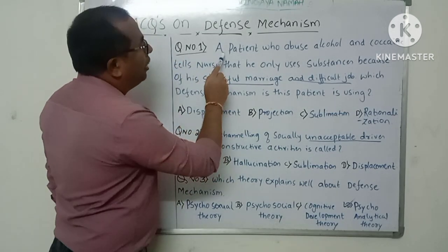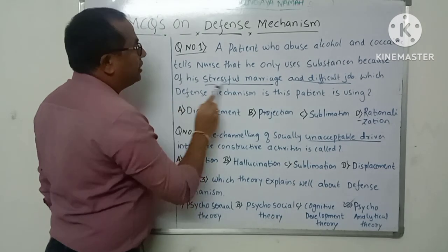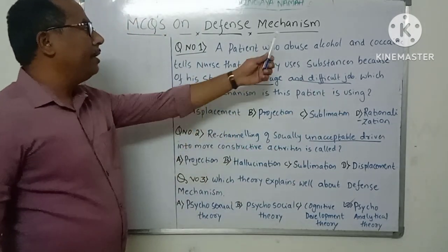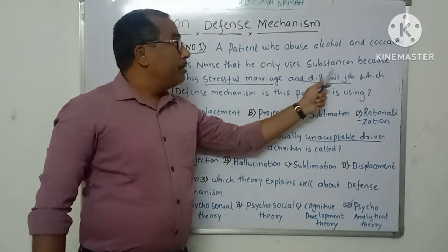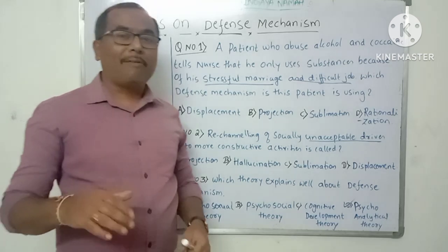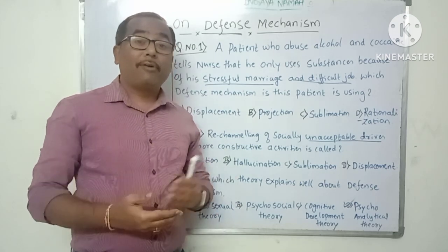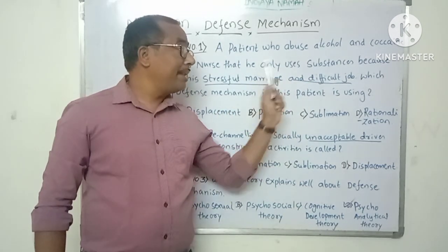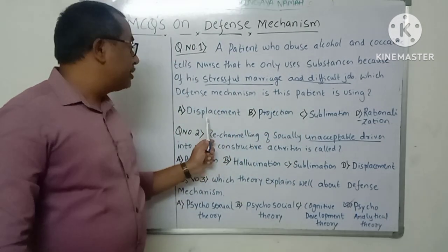Question number one: A patient who abuses alcohol and cocaine tells the nurse that he only uses substances because of his stressful marriage and difficult job. Which defense mechanism is this patient using? Here, the patient has a maladaptive behavior — he uses alcohol and cocaine — and he is citing a reason for his maladaptive behavior, that is, his stressful marriage and difficult job. So he is giving a rational reason for his maladaptive behavior.